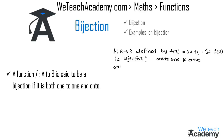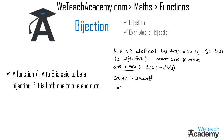If f(x) is a one-to-one function then it must satisfy the condition f(x1) = f(x2). Writing f(x1) by replacing x with x1 we get 3x1 + 4, and writing f(x2) by replacing x with x2 we get 3x2 + 4. Here 4 and 4 cancel on both sides giving 3x1 = 3x2, and cancelling 3 on both sides gives x1 = x2. So f(x) is a one-to-one function.